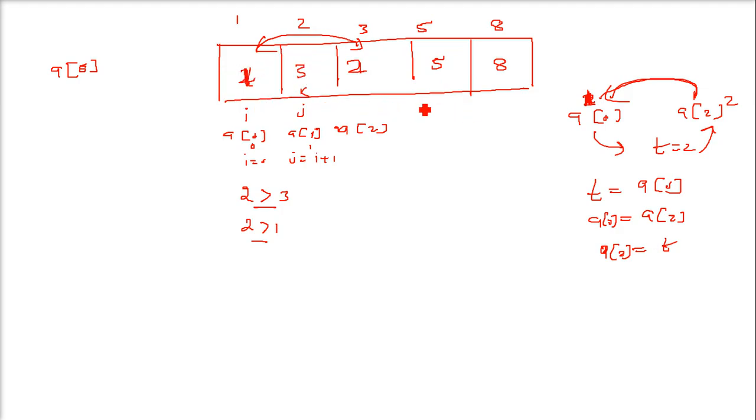So for one iteration, one go, you will have one value at its precise position. Then now we will increment i here. Now i will be here. Now j will be of course i plus 1. Again i is fixed now for this member. Now we will compare 3 with other members like 3 with 2, 3 with 5, 3 with 8. So 3 and 2 - 3 is greater than 2. So 2 will come here, 3 will come here. We have to swap. And this is how this goes on.